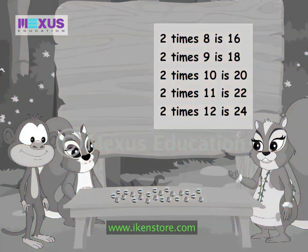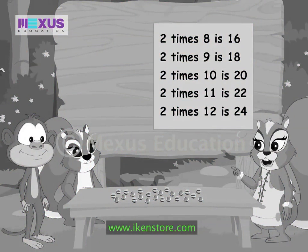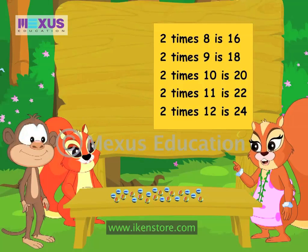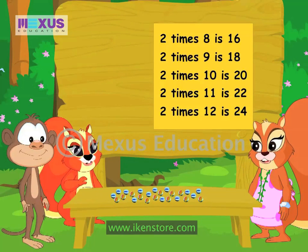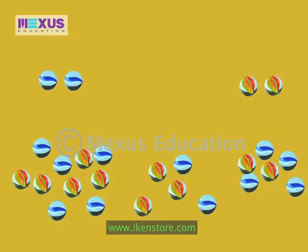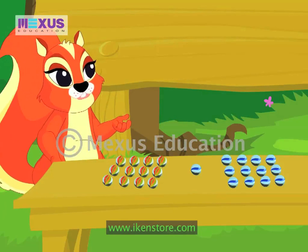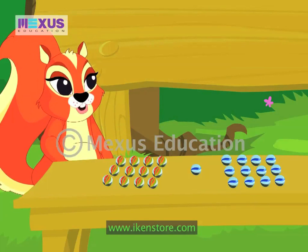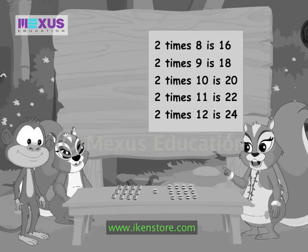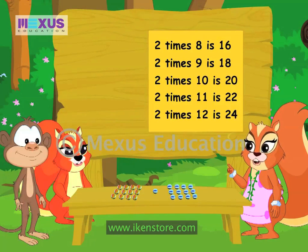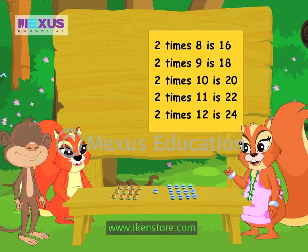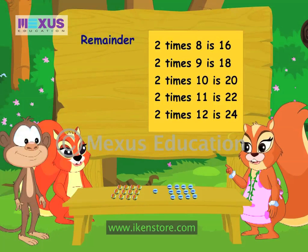We have just seen how we can divide 24 by 2 using the long division method. Amber, can you tell me if it's possible to divide these 25 marbles by 2? We can't divide 25 marbles by 2, because there is one extra marble left. Also, if you notice, there is no 25 in the 2 times table. If you try dividing 25 marbles into two groups, you are left with one extra marble. That leftover marble is called the remainder in division.